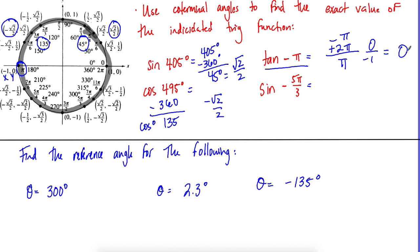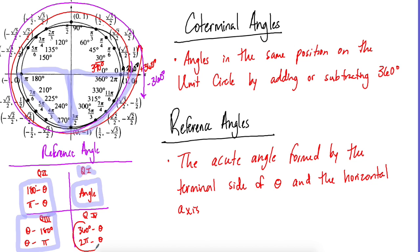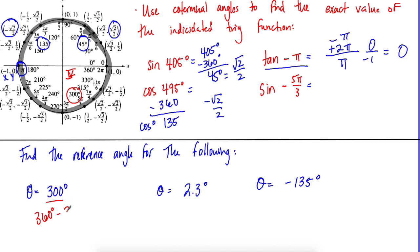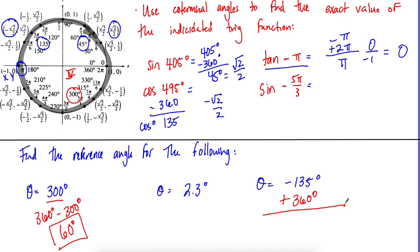For reference angles: 300 degrees is in Quadrant IV, so we do 360 minus 300, giving a reference angle of 60 degrees. For negative angles, since we don't have negatives on the unit circle, first find the co-terminal angle.